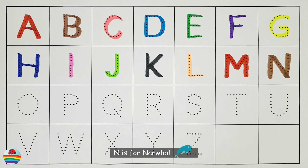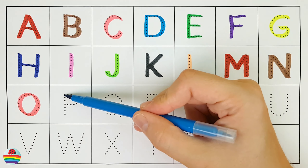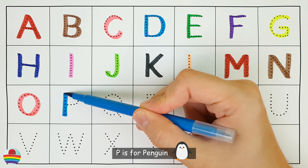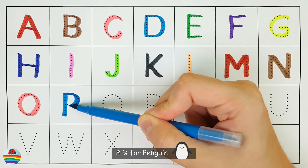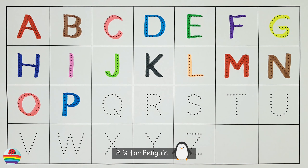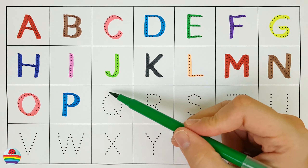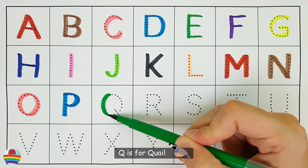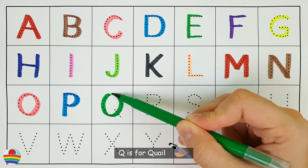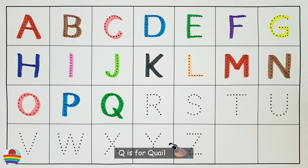M is for moose. N is for owl. O is for octopus.